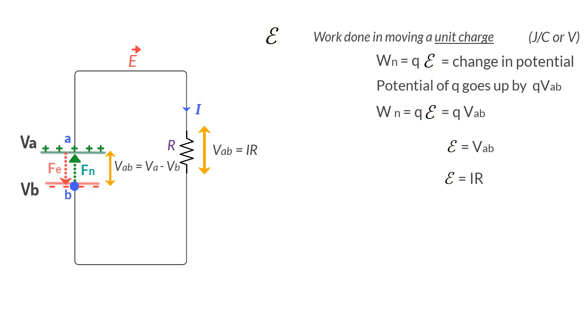We could interpret this equation as the rise in potential of a unit charge as the charge moves from B to A is equal to the potential drop VAB across the resistor as the same charge moves through the wire from A to B.